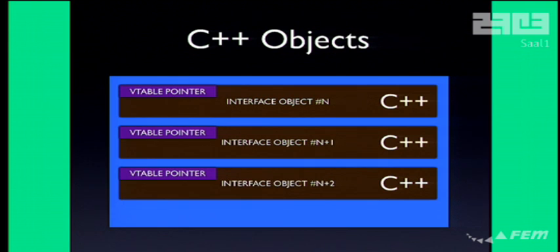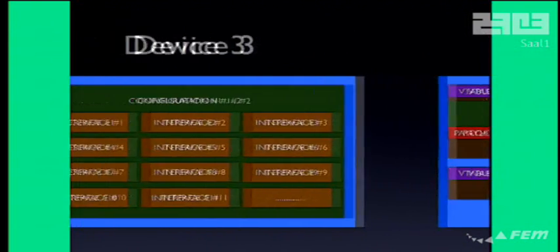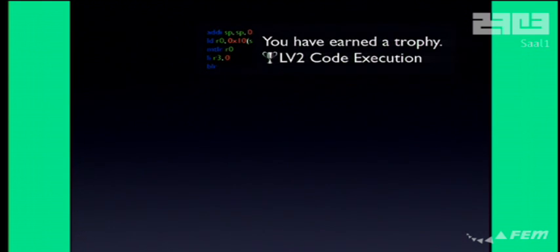It jumps into a C++ object array that belongs to device number three. It puts this configuration descriptor right on top of those C++ objects and overwrites their vtable to point to the payload. This vtable holds function pointers for things like destructors and virtual methods. So when these objects get destroyed, they run our code. When device number three gets unplugged, we gain LV2 code execution.